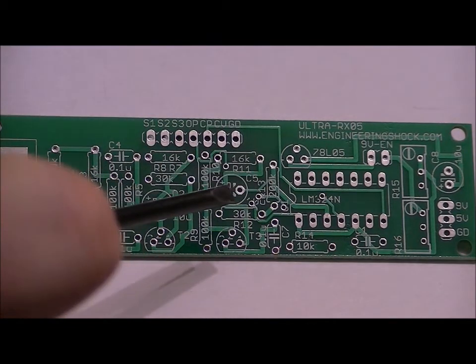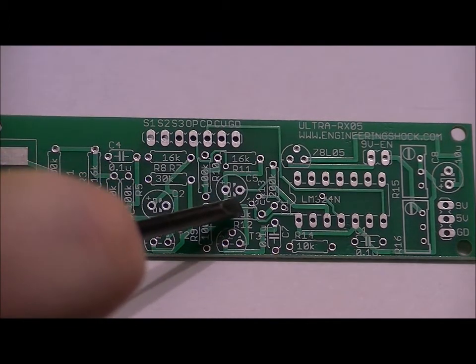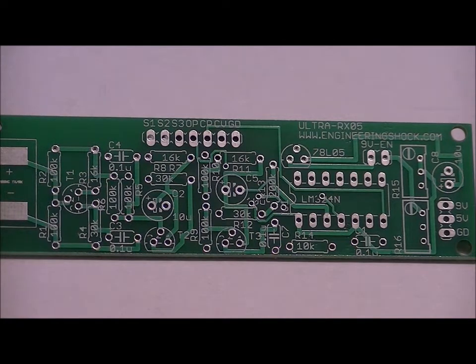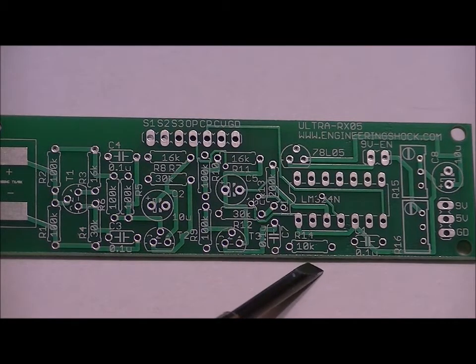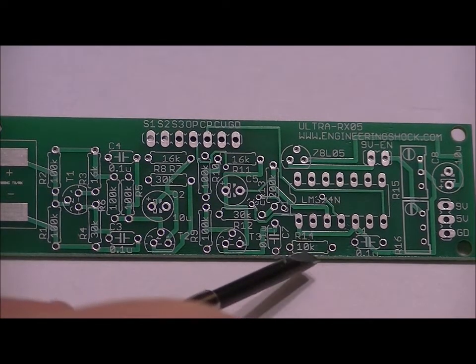Right here there's a 200k, I believe that's—it's hard to see from this angle—I believe it's R13, labeled 200k. We're just going to use a 180k ohm resistor there. Right here, R14 labeled 10k, we'll place our single 10k ohm resistor there.